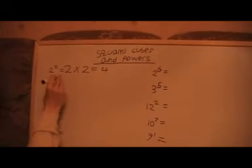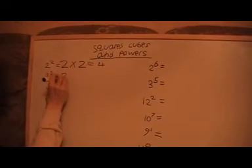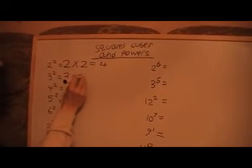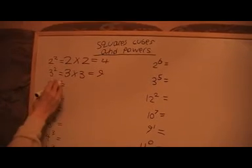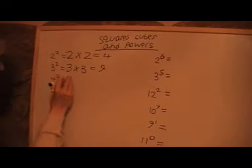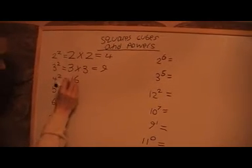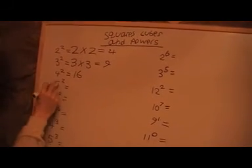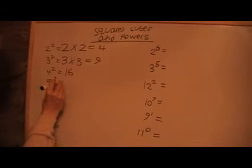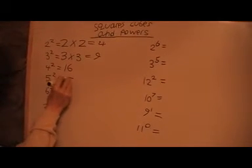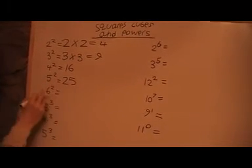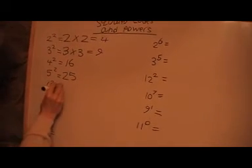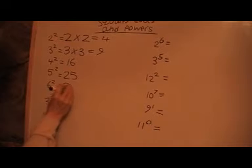And if I've got 3 squared, then I've got 3 times 3, which is 9. And this would be 16, because I've got 4 times 4. This one's 5 times 5, that's 25. That one's 6 times 6, so that's 36.